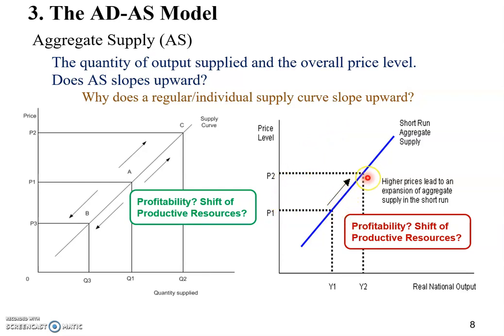When the overall price level goes up, how does that affect an individual market or industry? Using marijuana as an example again: when the price of marijuana goes up, you find it's more profitable to produce marijuana. But on the right-hand figure, this is the overall price level — meaning producers in a different market, like bike manufacturing, also find that bike prices increase proportionally, because this is an overall price increase.